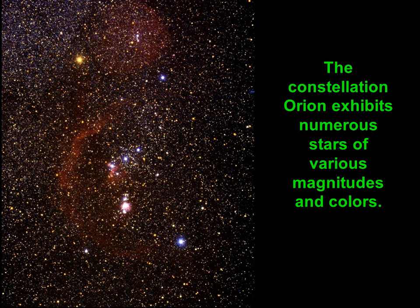Look down at the middle of the screen. There you'll see three stars on a diagonal very close together — those are Orion's belt stars, and they are all second magnitude stars. Just below them there's a fuzzy patch. That's not actually a star; it is a great cloud of gas and dust called the Orion Nebula, or M42.